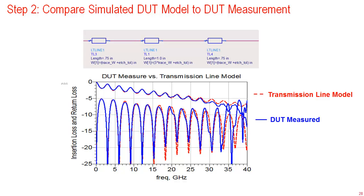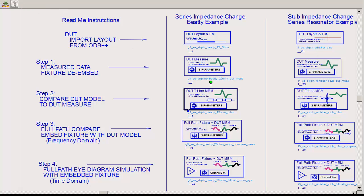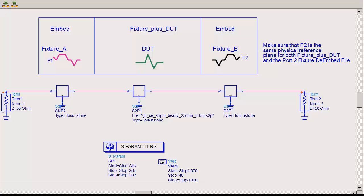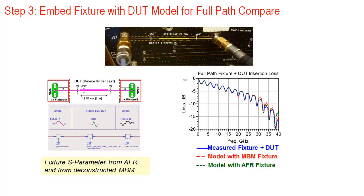And this time embed the fixture with the verified DUT model. Here in step three, we take the simulated S-parameters for the DUT and embed the fixture on either side by cascading the three S-parameter behavioral models together. This is an important step in matching simulation to measurement, since now we have a measurement made with an instrument calibration using traceable coaxial standards. This measurement is left unchanged and we are now seeing how well the simulation can actually predict this measured performance.